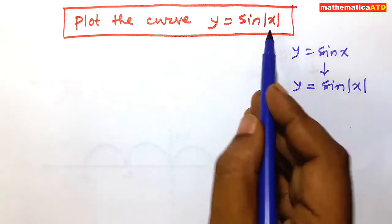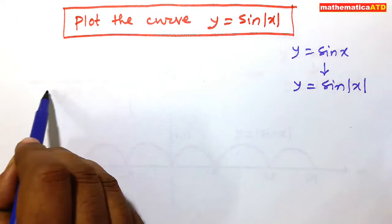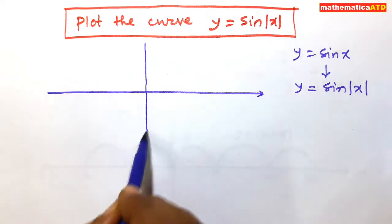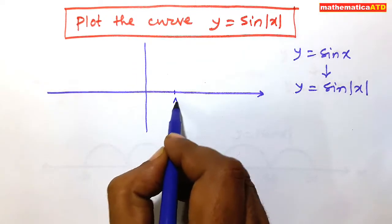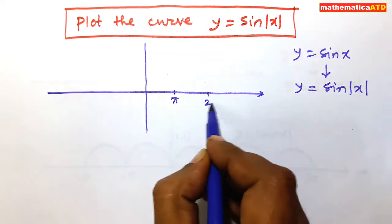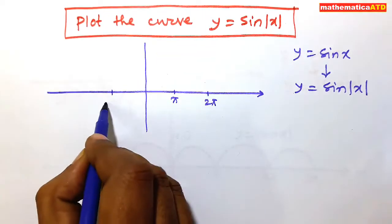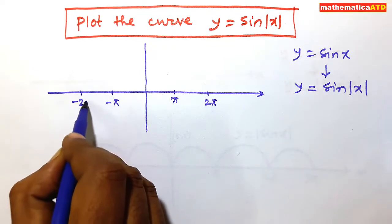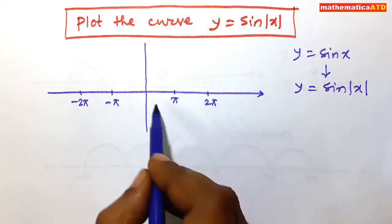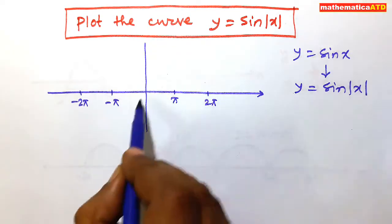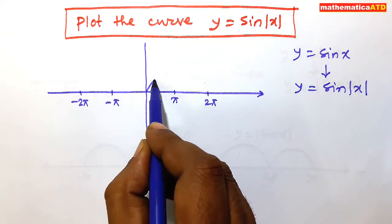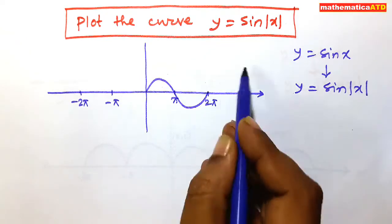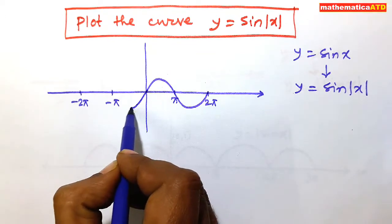So we draw sin x. This is (π, 0), this one is (2π, 0), this is (-π, 0), this is (-2π, 0). The curve for sin x will be like this, and so on on both sides.